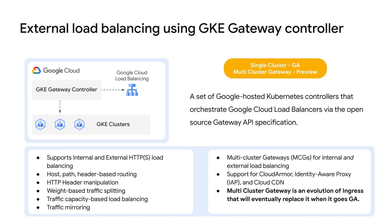Now let us understand the GKE gateway controller and how it is used for external load balancing. The gateway controller is Google's implementation of the gateway API for cloud load balancing. Similar to the GKE ingress controller, the gateway controller watches a Kubernetes API for gateway API resources and reconciles cloud load balancing resources, implementing the networking behavior specified by the gateway resources. There are two versions of the GKE gateway controller: single cluster, which manages single cluster gateways for a single GKE cluster and is generally available, and multi-cluster, which manages multi-cluster gateways for one or more GKE clusters. Unlike the GKE ingress controller, the gateway controllers are not hosted on GKE control planes or in the user's project, making them more scalable and robust.